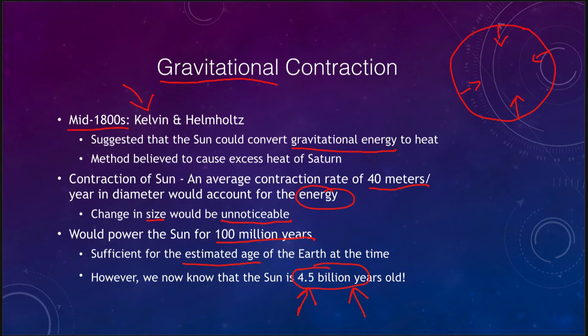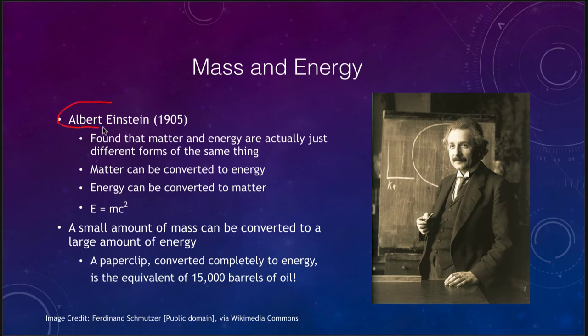In order to understand how the Sun produces energy today, we can look at what Albert Einstein gave us in 1905. He found that matter and energy are just different forms of the same thing. We have his famous equation E equals MC squared. What that tells us is that we can convert matter to energy and energy into matter. They are related by this constant called the speed of light.